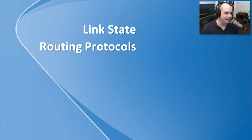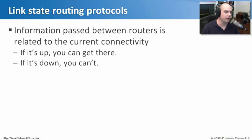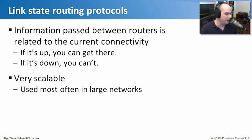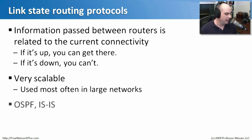Let's start with link state routing protocols. They get their name because the information routers share with each other is related to the link — the current connectivity. If the link is up, you can go there; if it's down, you can't. There are some very complex protocols that determine if a link is available and if we can route between those. This is very scalable and used often in very large networks, because understanding the state of the link involves a router understanding a lot about the entire network.